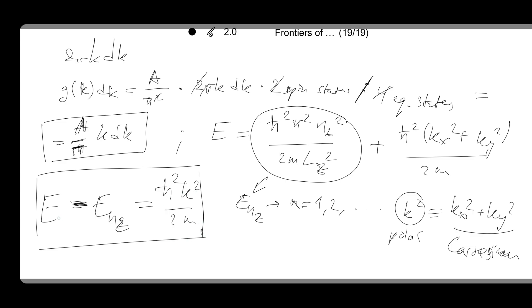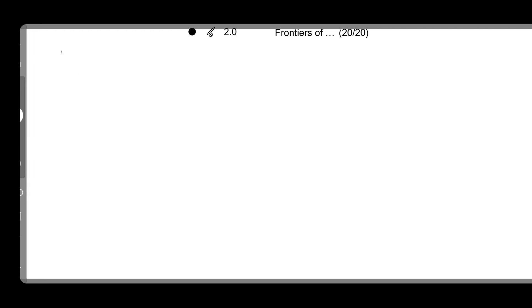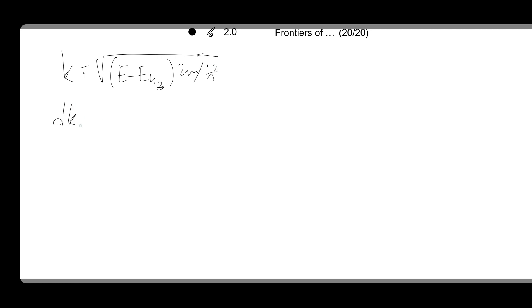So we have all the ingredients then to derive the values. So first we need to express this k in terms of energy. k is square root of (E minus Enz) times 2m divided by h-bar squared. Then we are taking the derivative of this one. dk is, using the chain rule, 1/2 times (E minus Enz times 2m over h-bar squared) to the minus 1/2 times the derivative of what's inside, 2m over h-bar squared dE.